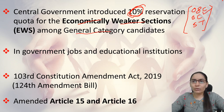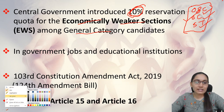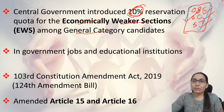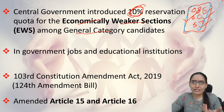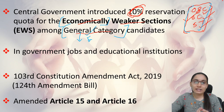The OBC, SC, and ST quotas are all based on social backwardness — meaning communities that have historically been socially backward and face difficulties entering mainstream education or government jobs. Now the government wants to give reservation to economically backward sections who belong to the general category, i.e., the forward class.